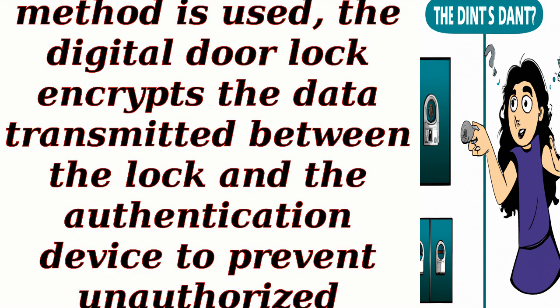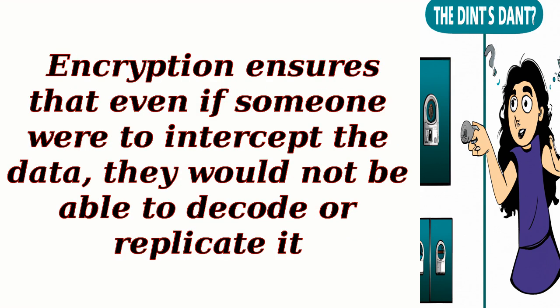Encryption. When an authentication method is used, the digital door lock encrypts the data transmitted between the lock and the authentication device to prevent unauthorized interception and access. Encryption ensures that even if someone were to intercept the data, they would not be able to decode or replicate it.